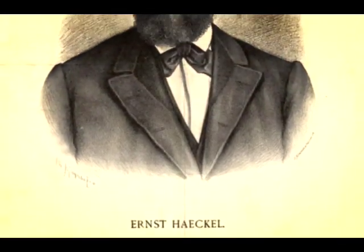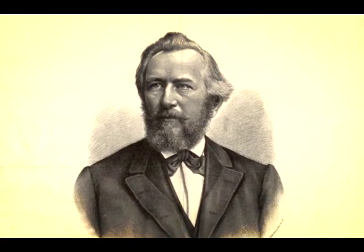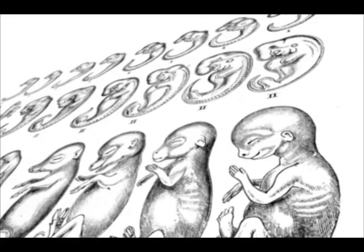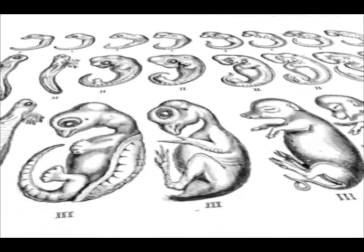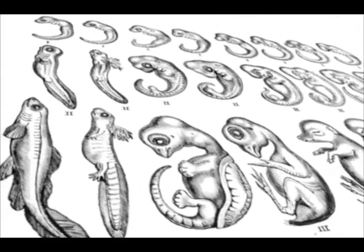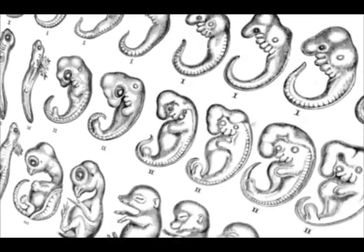In the late 1800s, German naturalist Ernst Haeckel produced drawings that seemed to confirm Darwin's claim. Haeckel was a German biologist and artist, a contemporary of Darwin's, who made famous drawings of vertebrate embryos — fish, humans, salamanders, chicks, turtles, and so on — trying to show that all these different vertebrates look very much the same as early embryos.